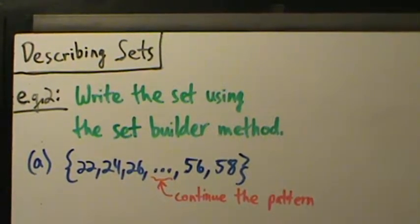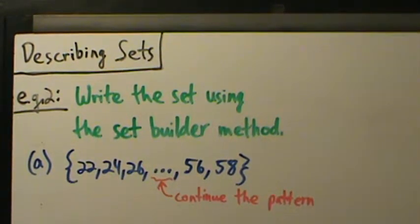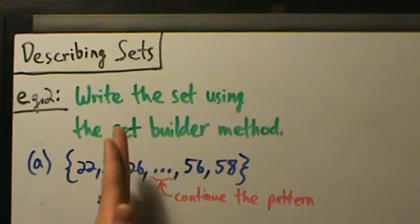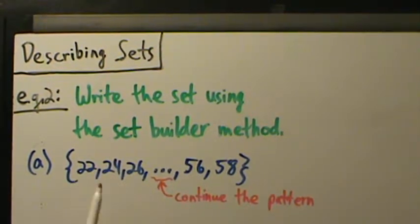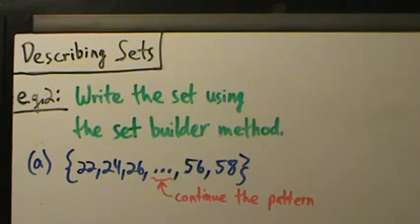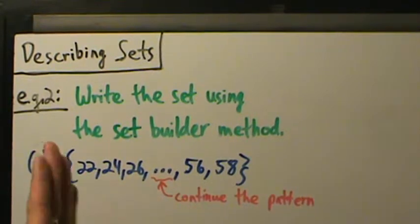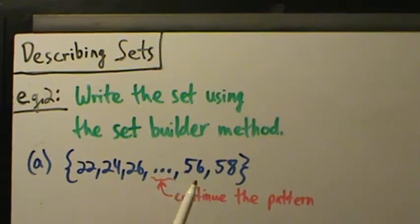Continue what pattern? The pattern established by the first three numbers. So 22, 24, 26 — the next one will be 28, then 30, 32, 34, 36, and so on, increasing by two each time. So it looks like we're listing even numbers, and that continues until we get to 56, then 58, and then we stop.